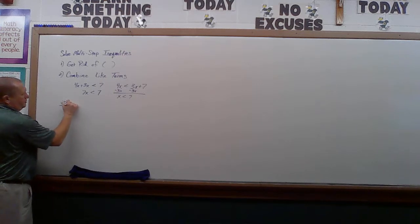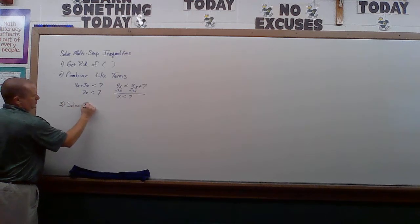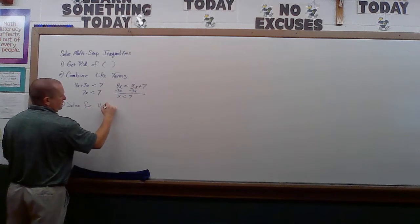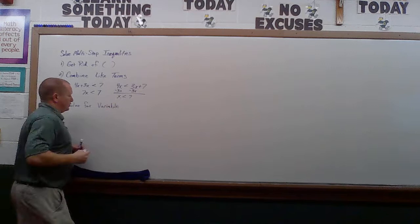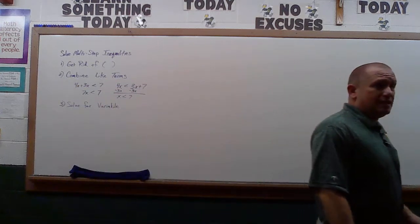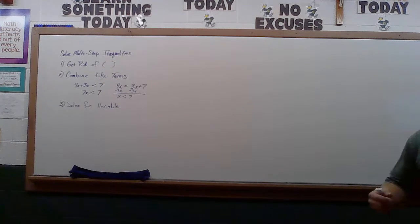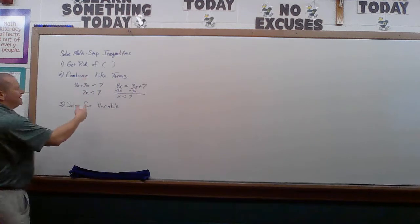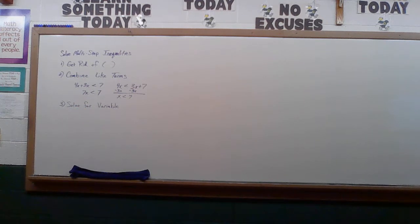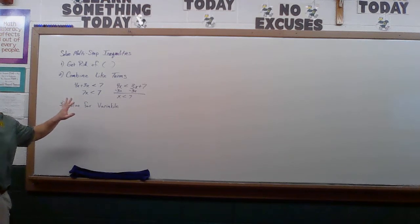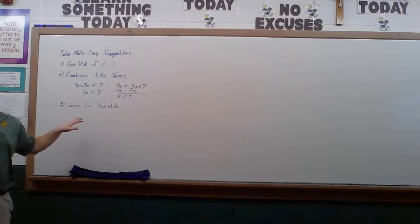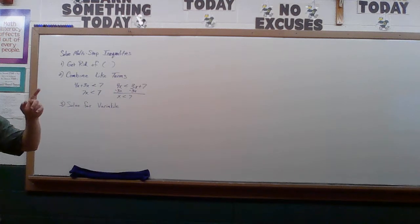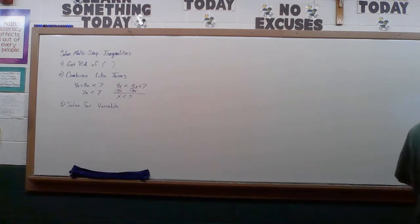Step three is basically solving for the variable. When solving for our variable, we want the variable to end up positive. The most important thing to remember: cover up that variable in a multi-step equation and try to get rid of the number first, then isolate that variable. If I multiply or divide by a negative, what do I have to remember? Flip the inequality sign.